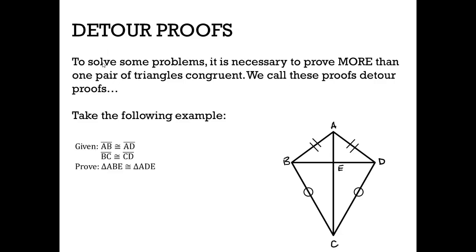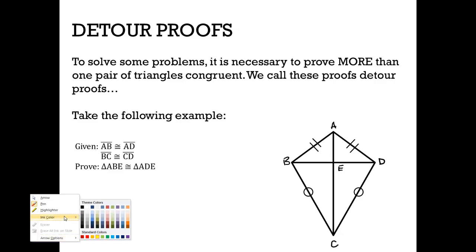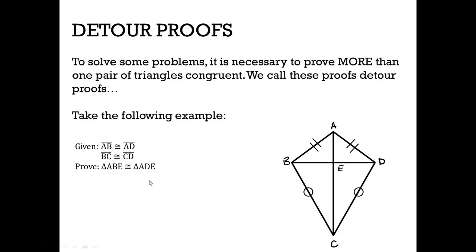We are given that AB is congruent to AD and that BC is congruent to CD. We need to prove that triangle ABE is congruent to triangle ADE. So out of this information that they give us, really only this seems to be useful. This really doesn't have any bearing on these two triangles that we are trying to prove.